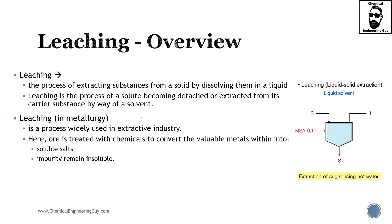It's time to start with leaching, which is pretty similar to liquid-liquid extraction. Leaching is the process of extracting a substance or substances from a solid phase by dissolving them in a liquid, typically a solvent. From this diagram, we have the inlet or feed, which is a solid, and the MSA, the material separating agent, which is our solvent in liquid phase.